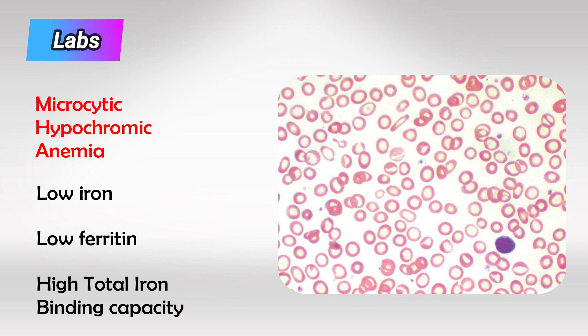Lab-wise, we will have decreased iron, of course, with decreased ferritin and increased total iron binding capacity (TIBC). TIBC measures transferrin's affinity to iron. Transferrin is basically in the blood to transport iron from one location to another, and if we have low iron in the blood, transferrin will have high affinity, looking for any iron available. So of course TIBC will be higher in patients with iron deficiency anemia.